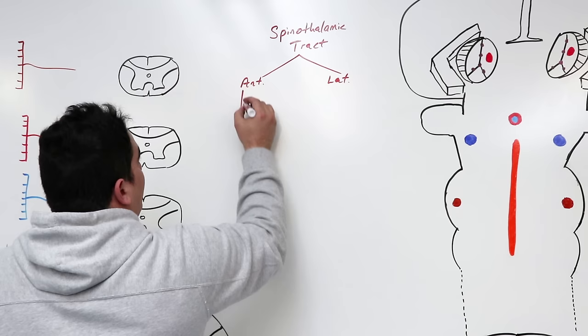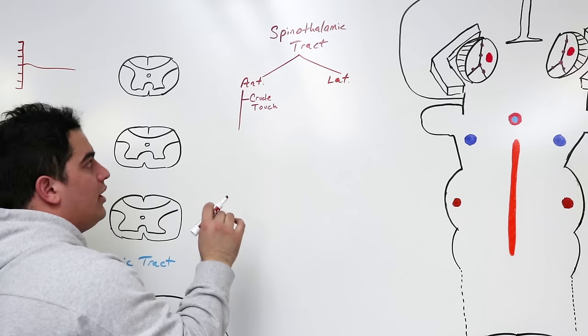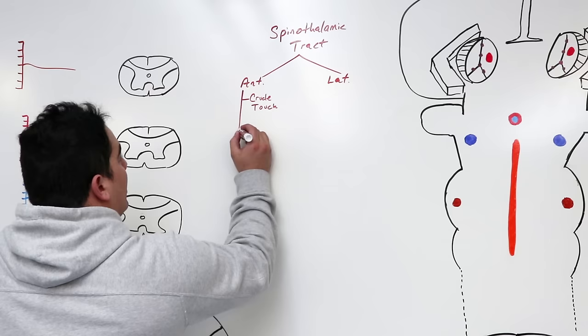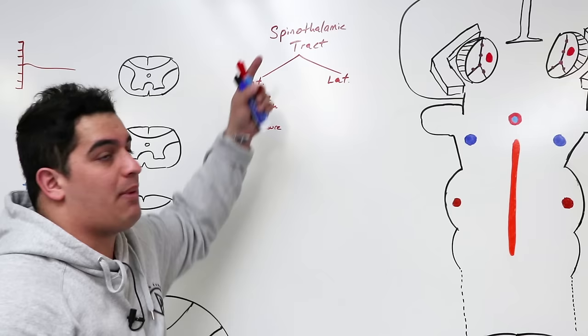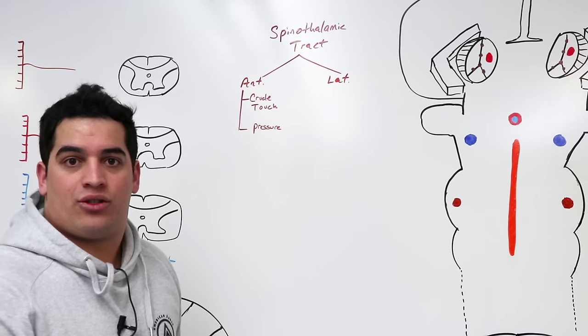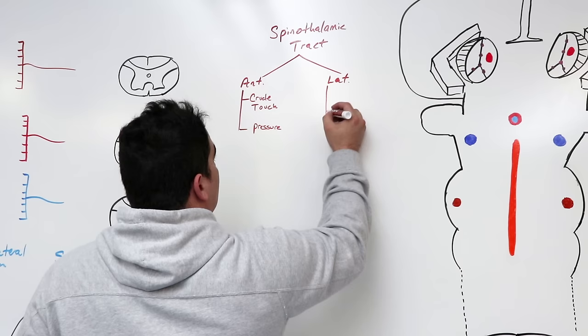The anterior spinothalamic tract is believed to carry sensations of crude touch — very light touch that you can't discriminate — and superficial pressure. The lateral spinothalamic tract is believed to carry specifically pain and temperature sensations.